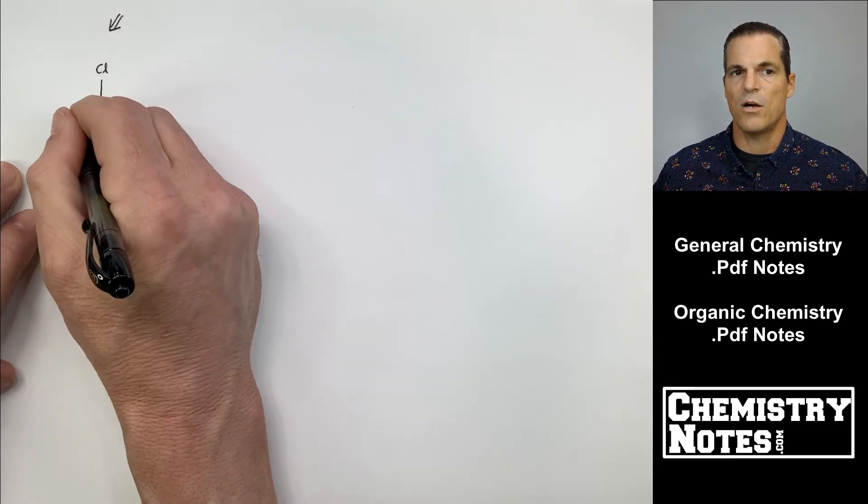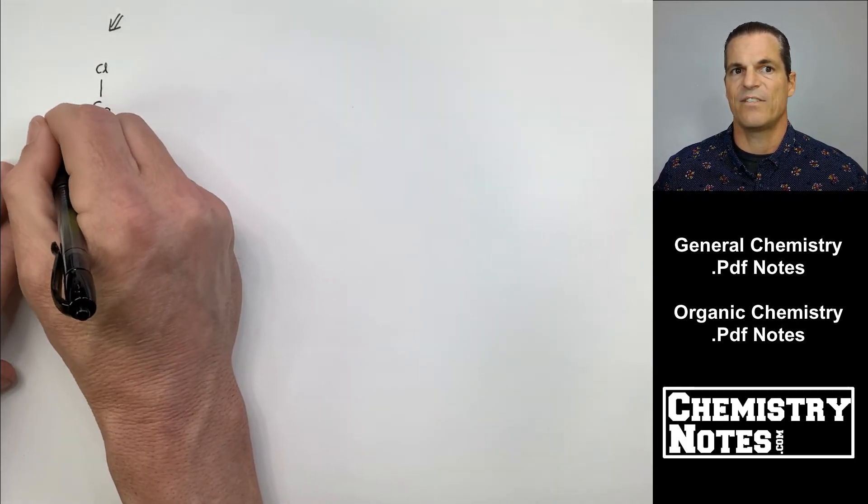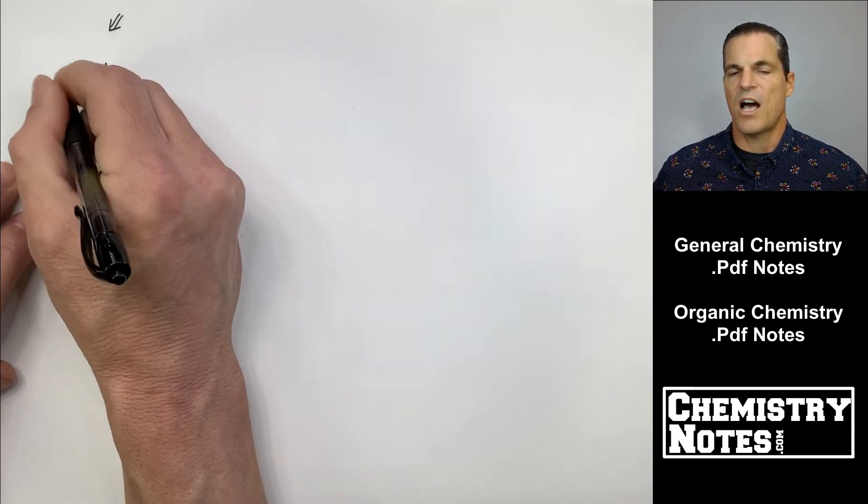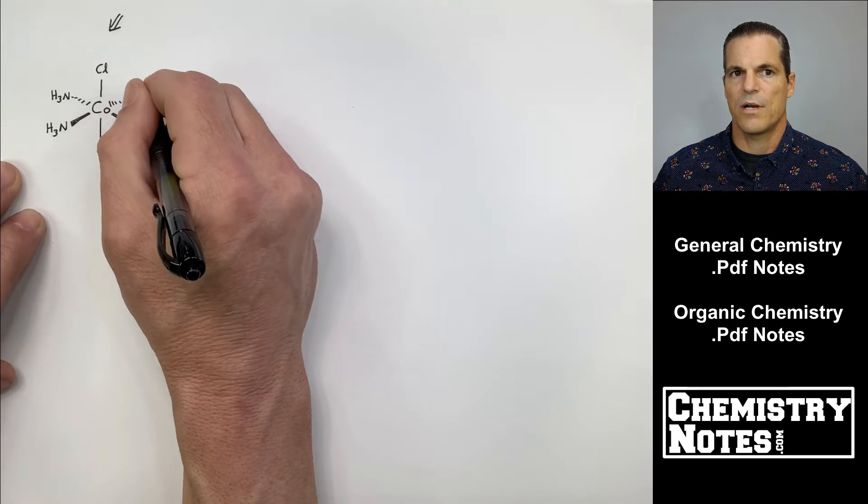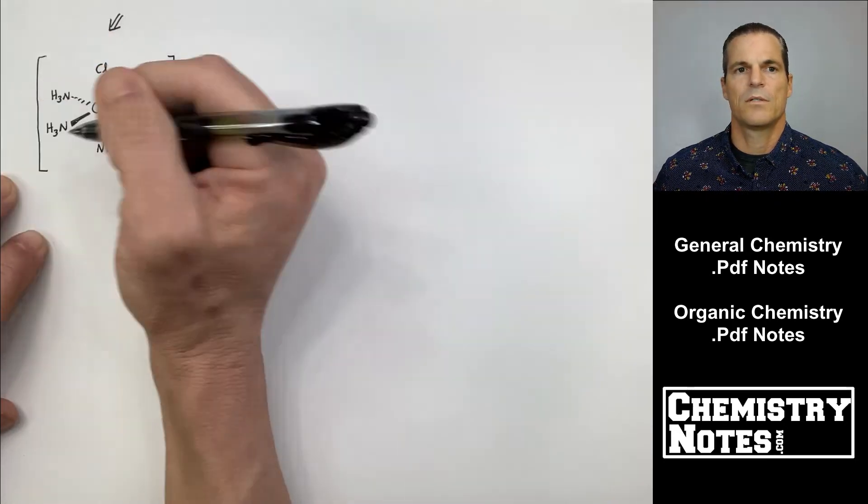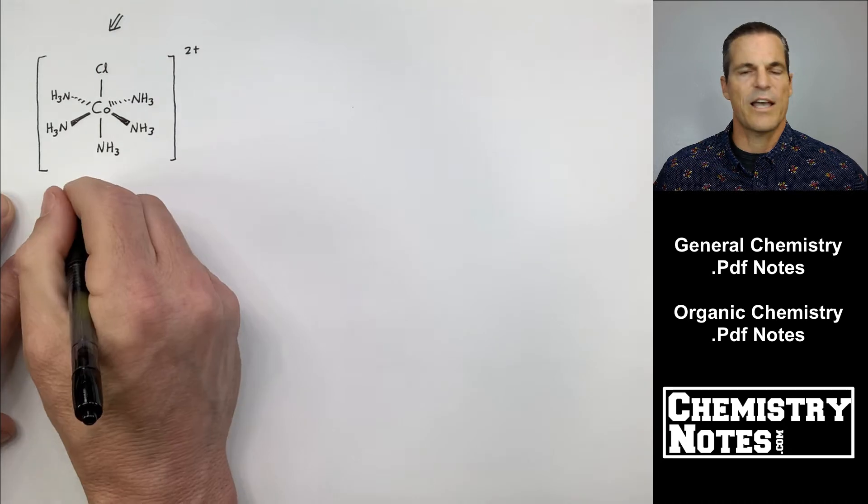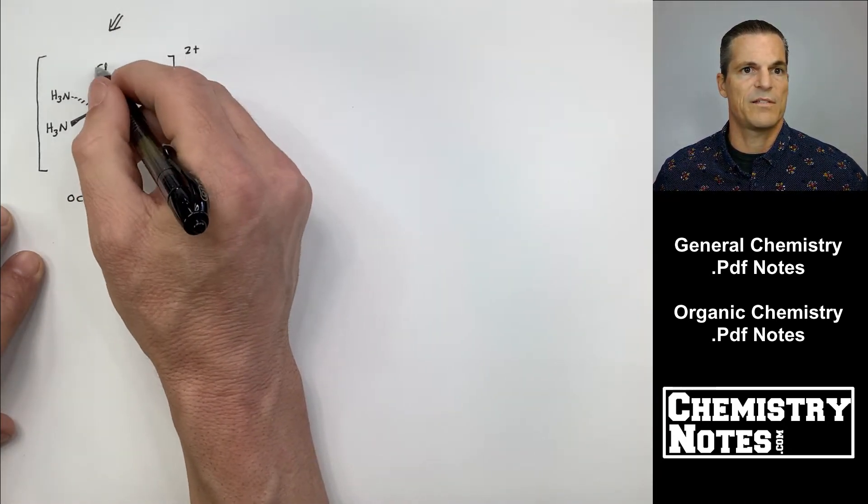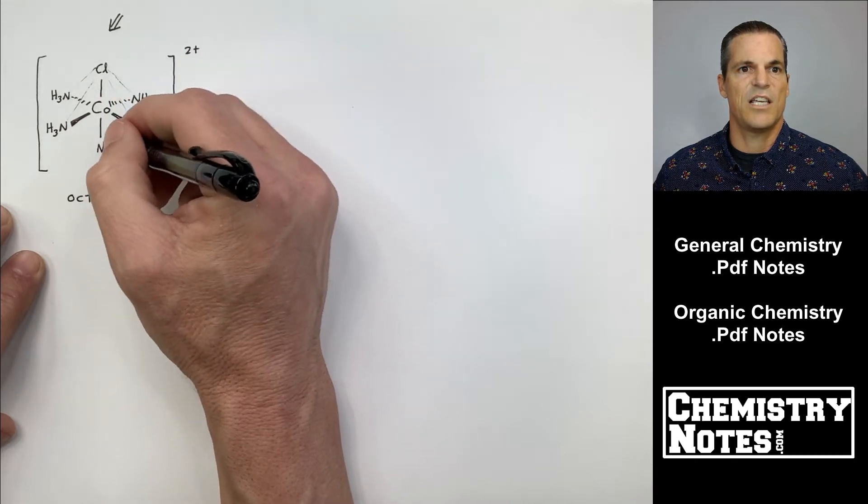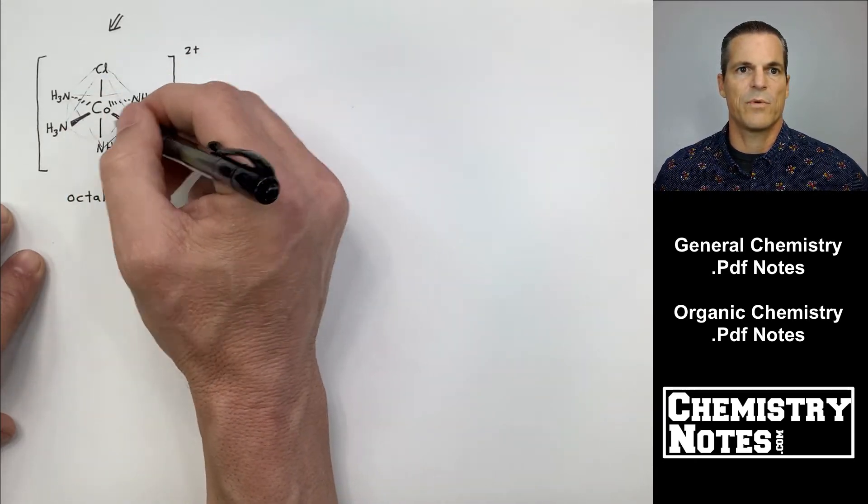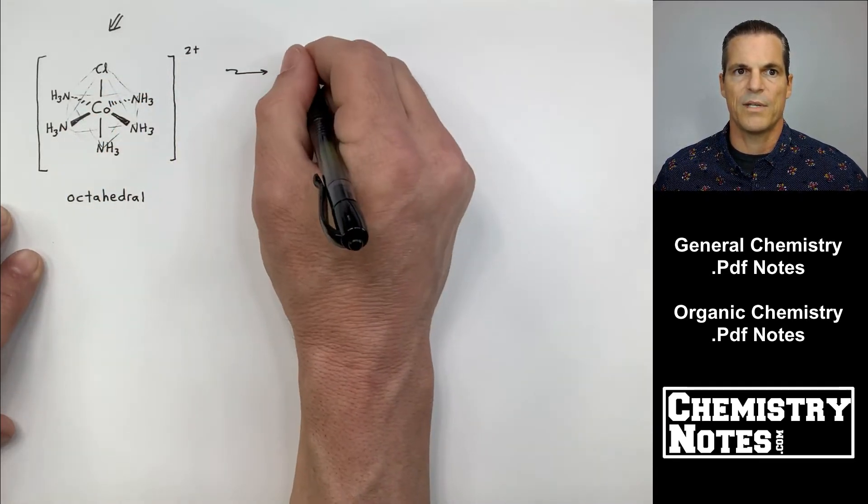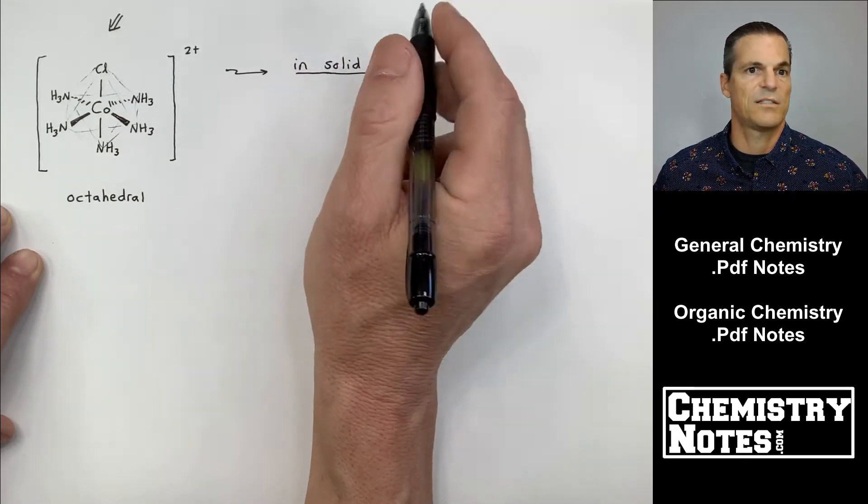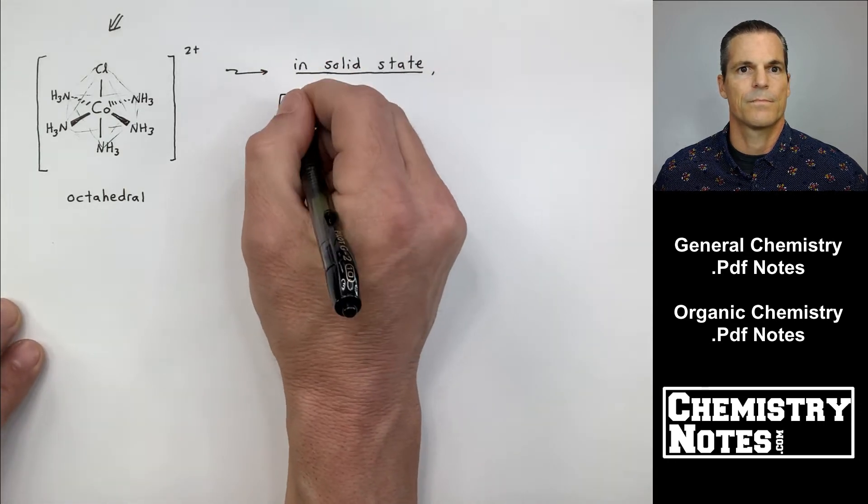I'm going to go ahead and draw Co(NH3)5Cl. I am drawing essentially an octahedral structure. Remember when we learned how to draw Lewis structures? So this is octahedral. I could have put the Cl anywhere, by the way, it would have been the same, but you can see this is an octahedral pattern. So I put brackets around it and put my 2 plus up there. This is just me drawing the complex ion the way it actually appears in solid states.